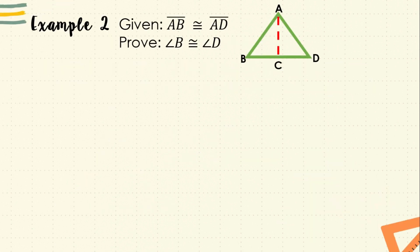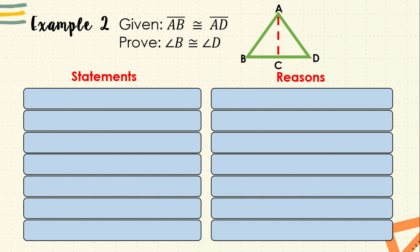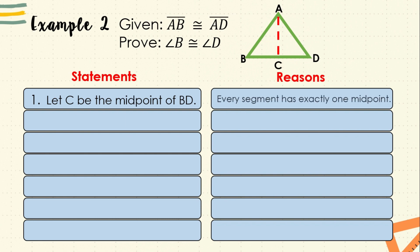We will prove the isosceles triangle theorem using the two-column proof. In triangle ABD, it is given that side AB is congruent to side AD. We will prove that angle B is congruent to angle D. First, let C be the midpoint of BD — every segment has exactly one midpoint. Second, we can draw an auxiliary line using point A and midpoint C, because two points determine a line.